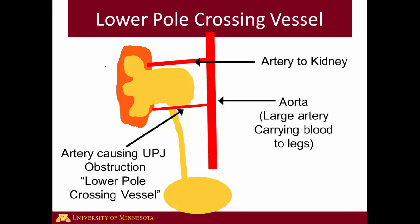The other cause of obstruction or blockage at the UPJ is a lower pole crossing vessel. This is essentially an artery that goes to the kidney from the aorta. This is the aorta, which is the large artery that carries blood from your heart through your abdomen down to your abdominal organs as well as to your legs. Most of the time there's one artery to the kidney. But in about 50% of people with UPJ obstruction and about 20% of people without UPJ obstruction, there's a second artery that comes down and goes to the lower part of the kidney — and you can see it crosses the UPJ right here.